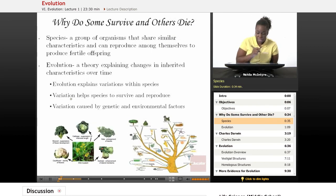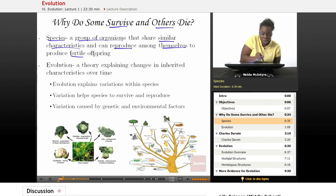Let's start off by talking about what a species really is and how does that fit into the theory of evolution. So why do some species survive and why do others die? Well, first of all, let's define what a species is. A species is a group of organisms that share similar characteristics and can reproduce among themselves to produce fertile offspring. So they must have similar characteristics and they must be able to reproduce viable offspring.